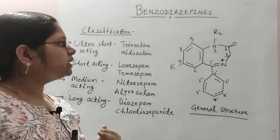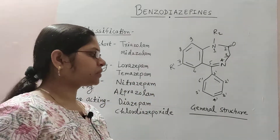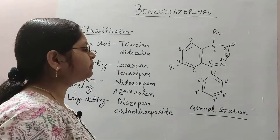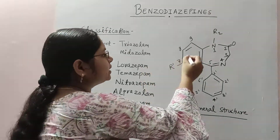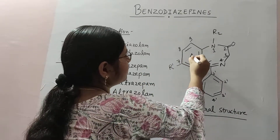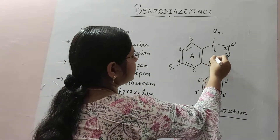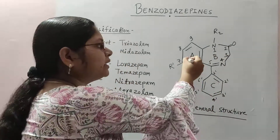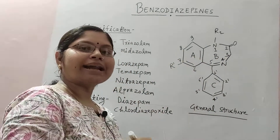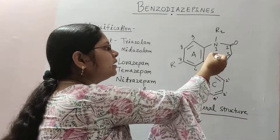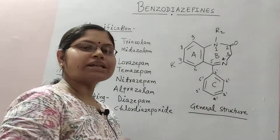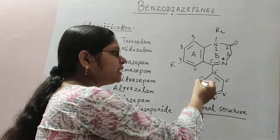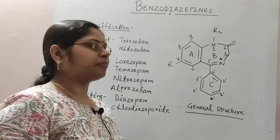If we talk about structure, this is the general structure of benzodiazepines having three rings: ring A, ring B, and ring C. Ring A is an aromatic ring, ring B is a seven-membered unsaturated ring, and ring C is also an aromatic ring.